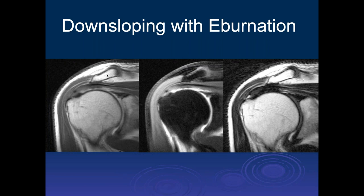Here's a similar degree of moderate lateral downsloping, but with irregularity of the inferior cortex and marginal osteophytes with some remodeling—more likely to be symptomatic. In the past, this might have led to acromioplasty. Now, for most patients it won't, but there is an associated bursal-side tear and bursal-side tendinosis that need to be described. There is probably a connection between the bony abnormality and the partial tear.